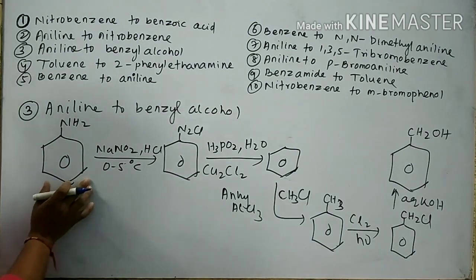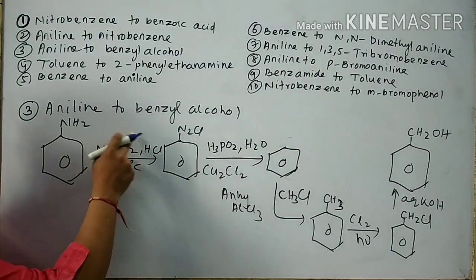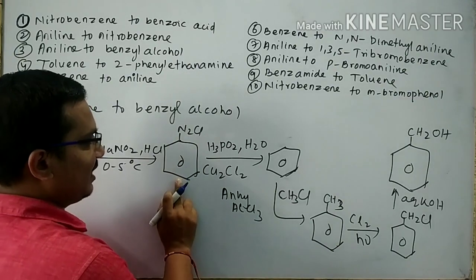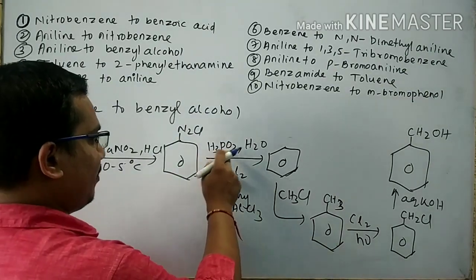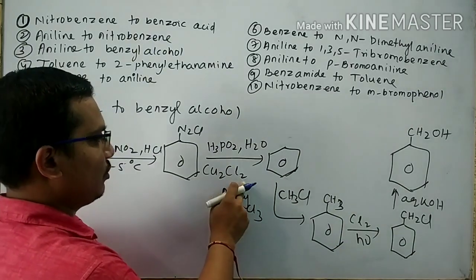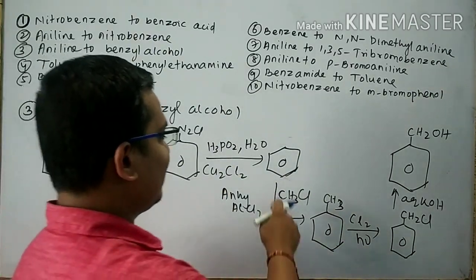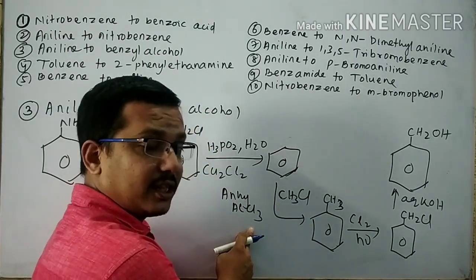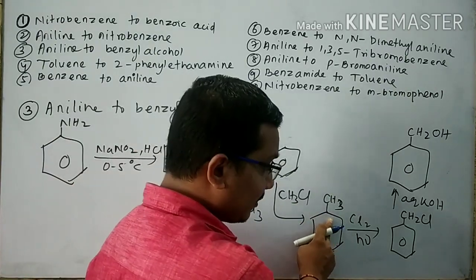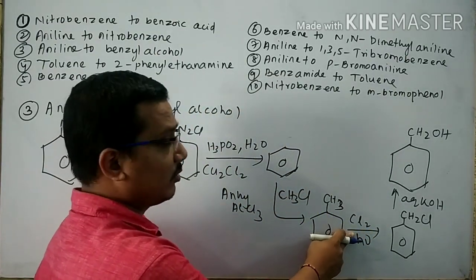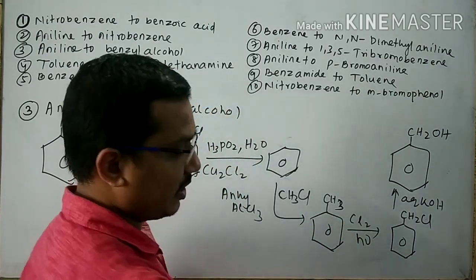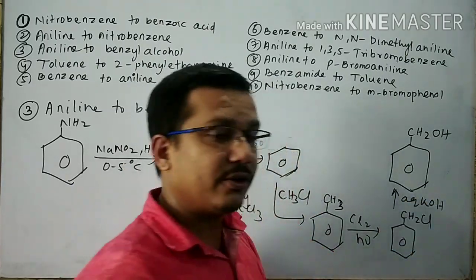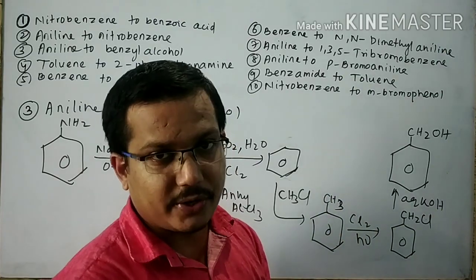To repeat: aniline reacts with NaNO2 in HCl at ice-cold temperature to form BDC. BDC reacts with H3PO2 and water in the presence of CuCl2 to form benzene. Benzene reacts with methyl chloride in the presence of anhydrous AlCl3 to form methylbenzene. Methylbenzene reacts with chlorine in the presence of sunlight to form benzyl chloride. Benzyl chloride reacts with aqueous KOH to give benzyl alcohol.